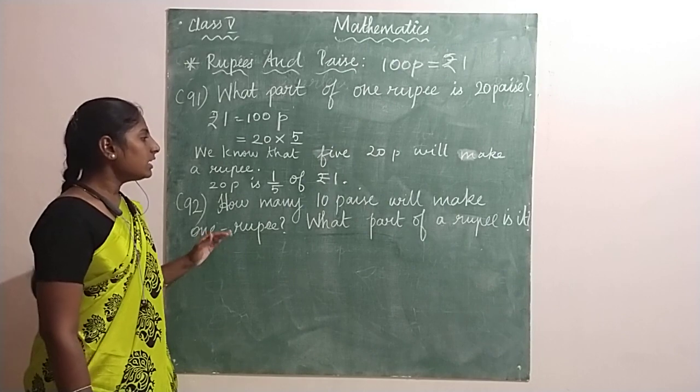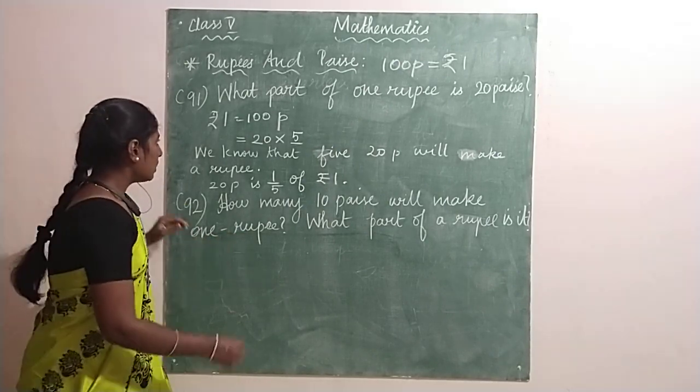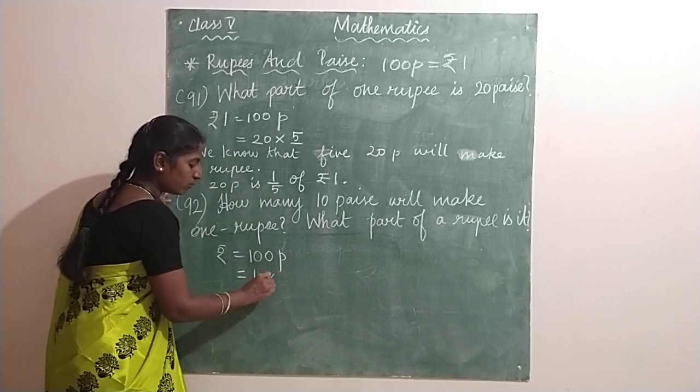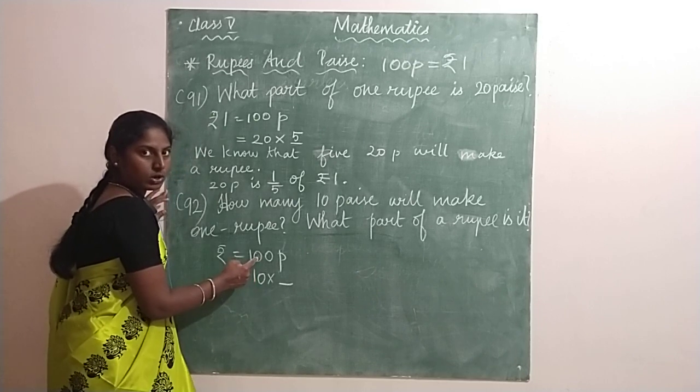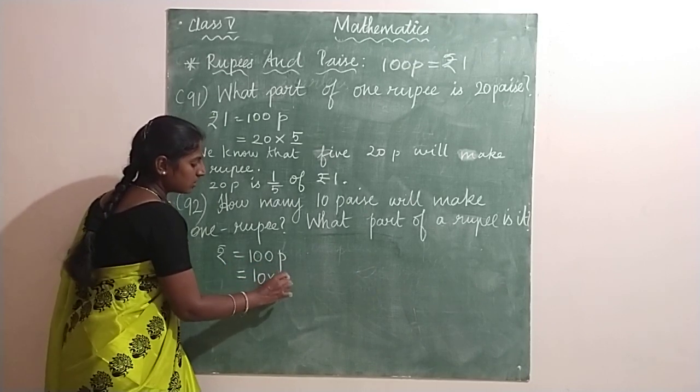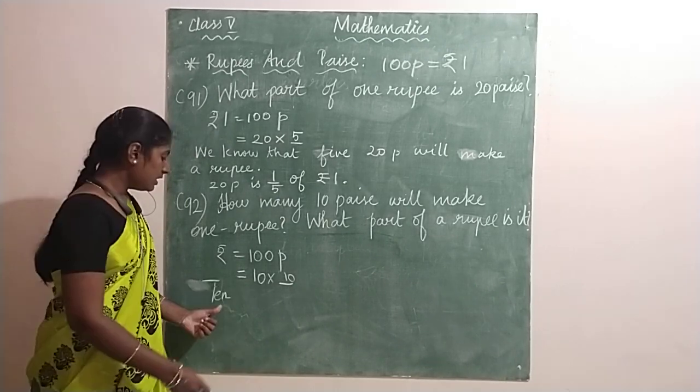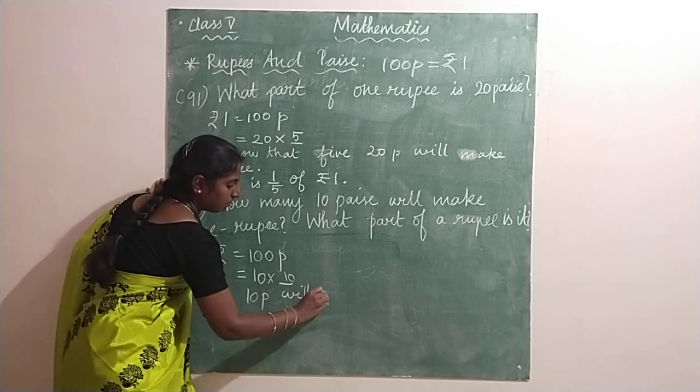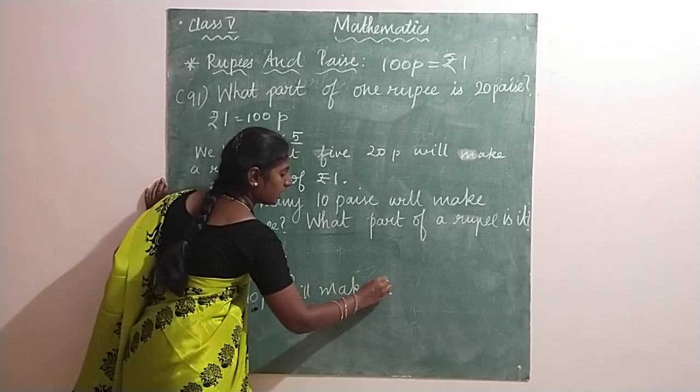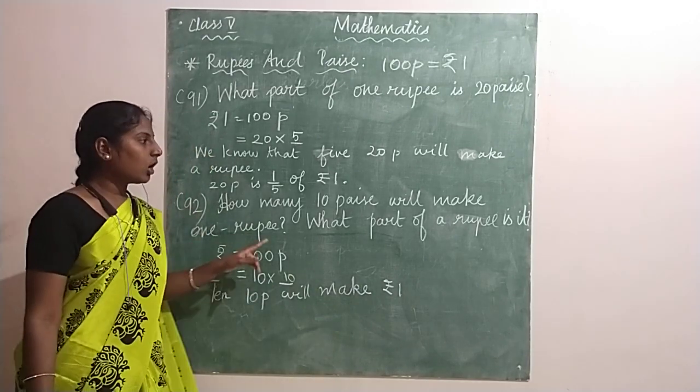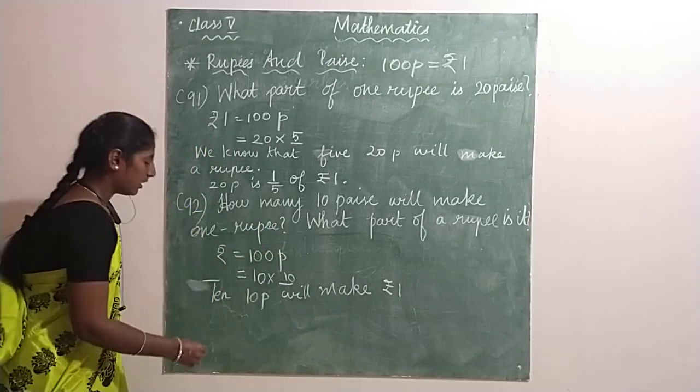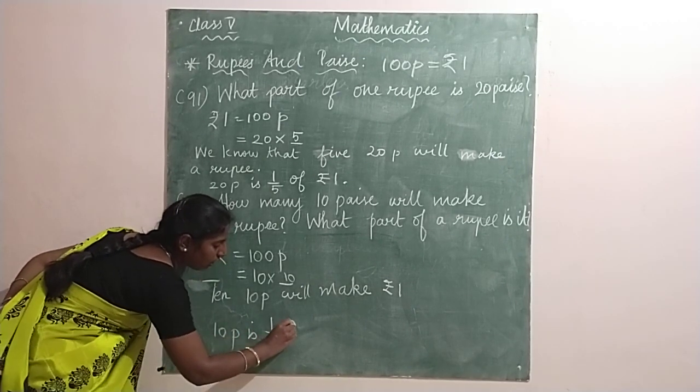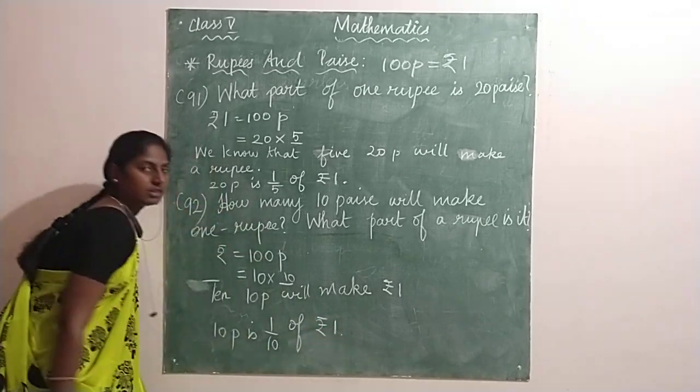Coming to the next one. How many ten paise will make one rupee? We know that one rupee is equal to hundred paise, and this hundred paise is ten into how much? Ten into ten will give you hundred. So you will write: ten paise will make a rupee. Then what you have to write—what part of a rupee is that? So you will write: ten paise is one by ten of a rupee. Is it clear for all of you?